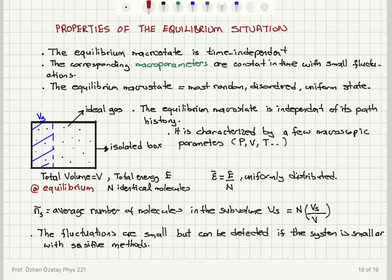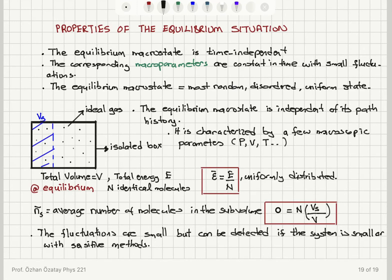Let's remind ourselves about this uniform distribution of energy — this is an important result — and the uniform distribution of particles in the box. The average number of molecules in the sub-volume Vs is capital N multiplied by Vs divided by the total volume V.